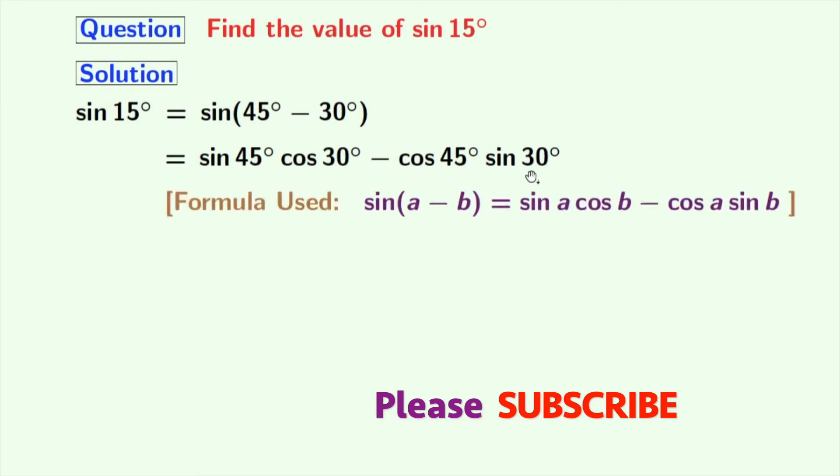The formula of sin A minus B is given here and that formula is sin A cos B minus cos A sin B. Here A is 45 and B is 30.